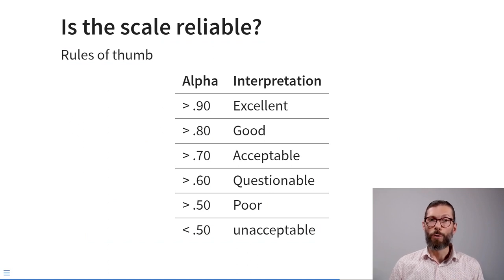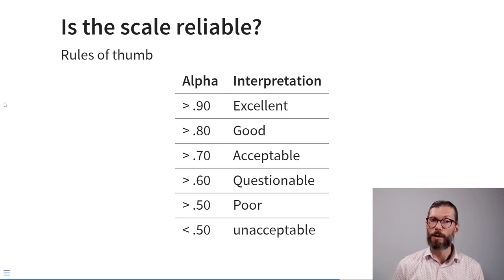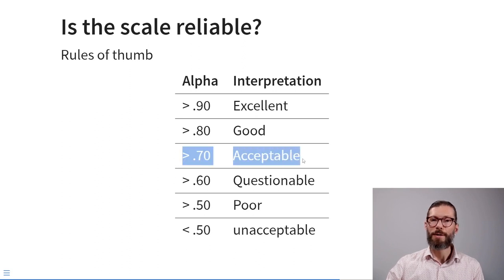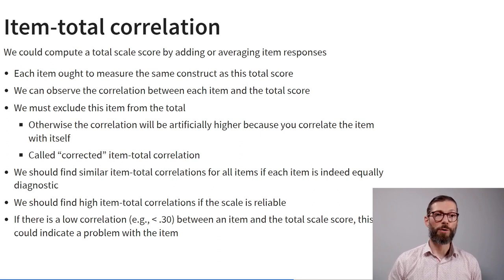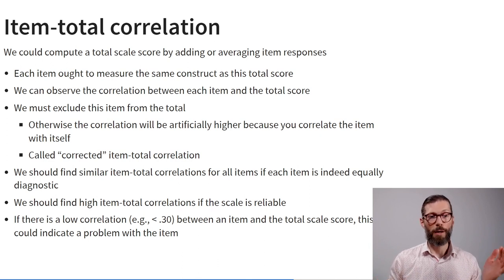There are also rules of thumb for interpreting Cronbach's alpha. The most important cutoff is around 0.70 — we consider scales with a Cronbach's alpha greater than 0.70 to have acceptable reliability. Another concept often mentioned alongside alpha is the item-total correlation: the correlation of individual items with the total scale score.